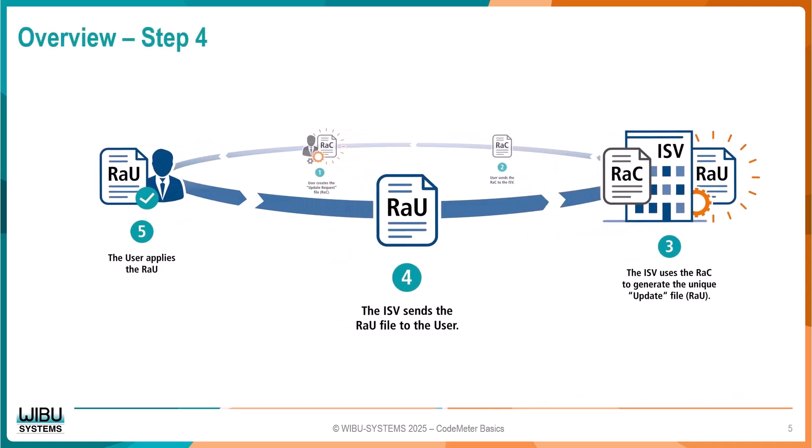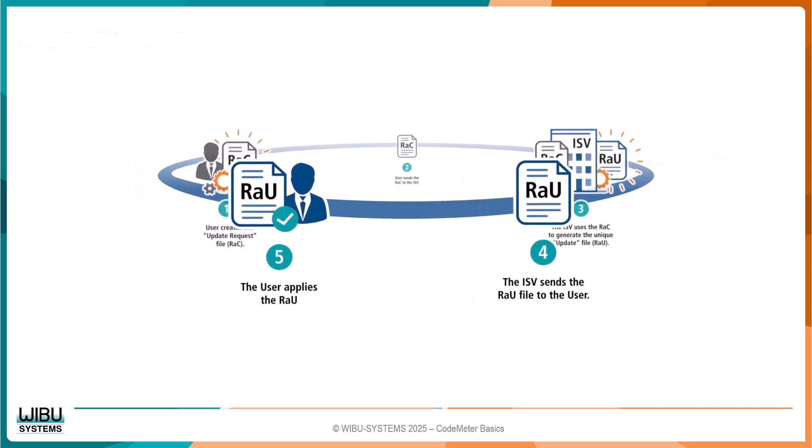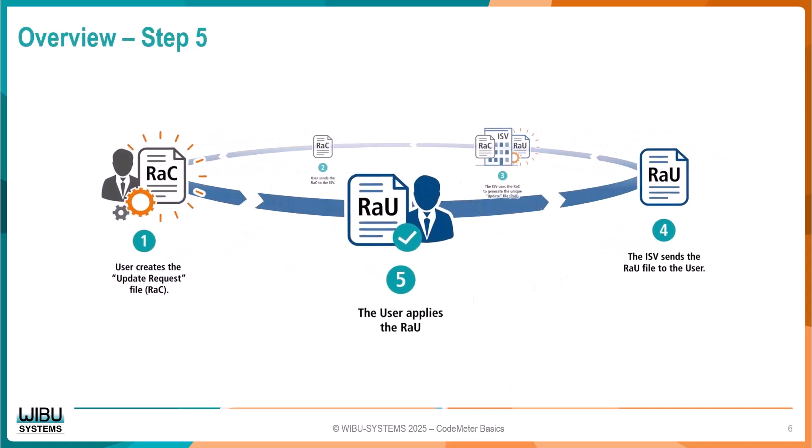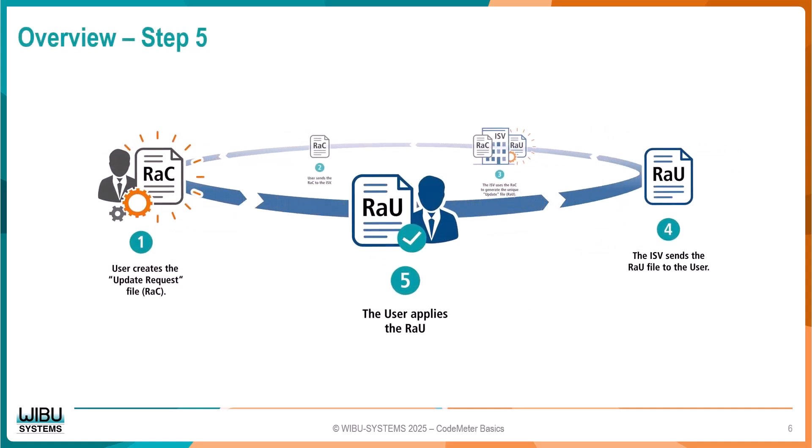Step 4: The ISV sends the RAU file to the user. Step 5: The user applies the RAU to activate the license. Now, let us examine these steps in greater detail.